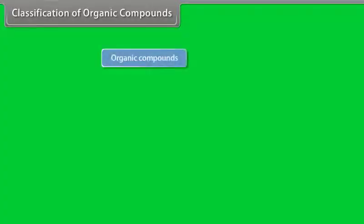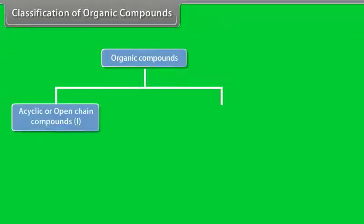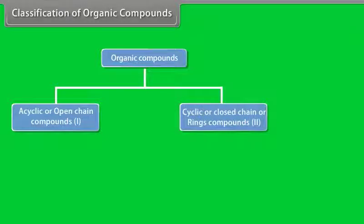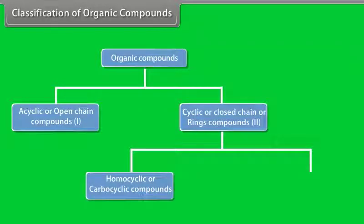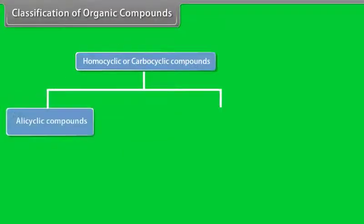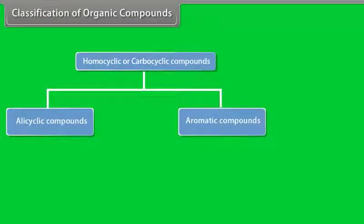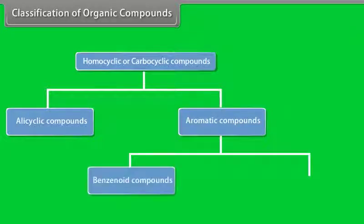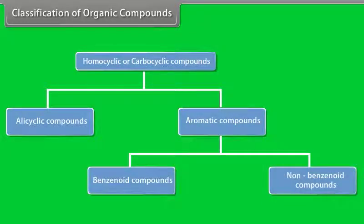Classification of organic compounds. Organic compounds can be grouped into acyclic or open-chain compounds, and cyclic or closed-chain or ring compounds. Cyclic compounds can be further divided into homocyclic or carbocyclic compounds, and heterocyclic compounds. Homocyclic can be further divided into alicyclic and aromatic compounds. Aromatic compounds can be further divided into benzenoid and non-benzenoid compounds.